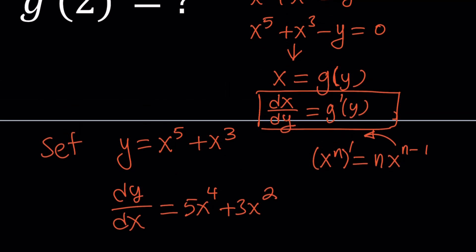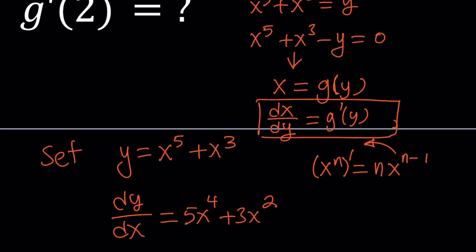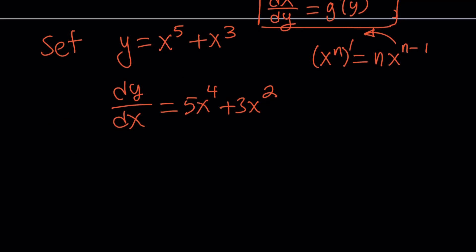Now, we need to find dx/dy at y = 2. But we can't do it directly, so we're going to do it indirectly. We're going to use the reciprocal, because dx/dy is the reciprocal of dy/dx. So this is going to become 1/(5x^4 + 3x^2).